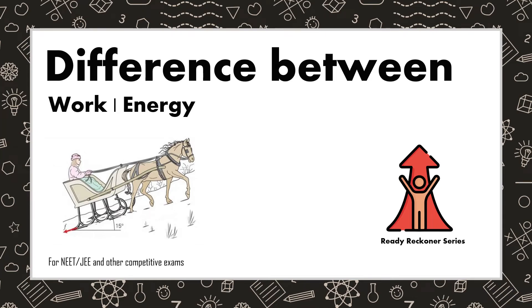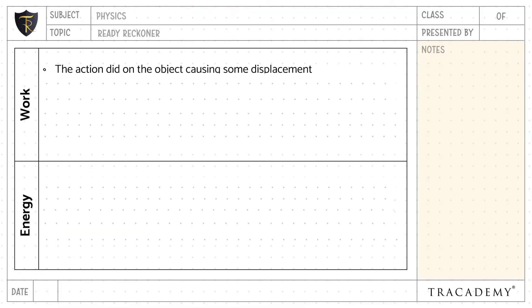In this video, let us understand the difference between work and energy. Work is the action done on the object causing some displacement, whereas energy is described as a property of a system or the ability to do work.